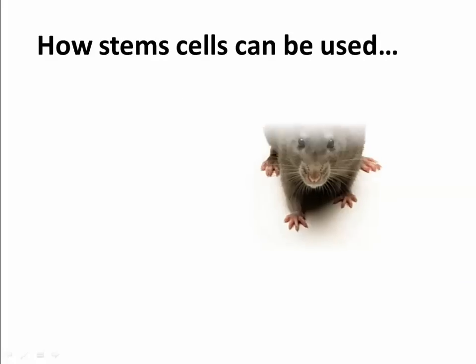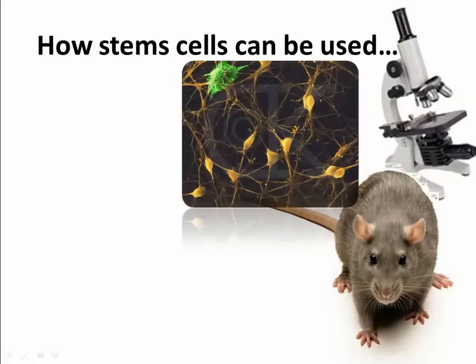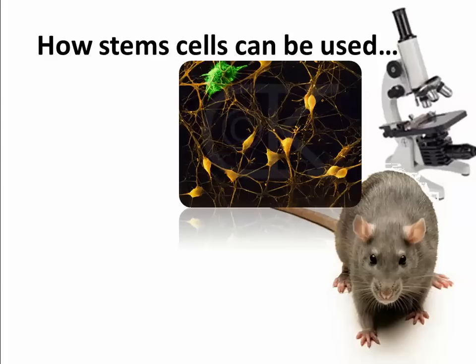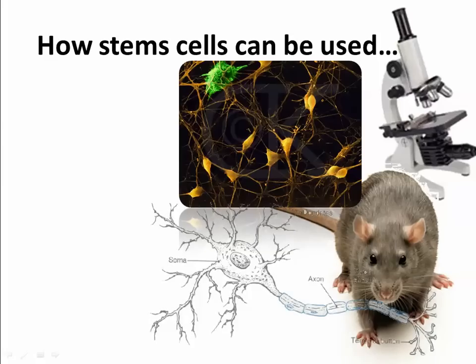Stem cells can be used to treat various types of diseases, and we're finding out more and more about this. Hopefully within the next 20 years, these technologies will be developed enough to help with heart disease, pancreatic disease, and various types of nervous system failures. Imagine the potential — the idea that you could take a stem cell that hasn't turned into anything yet, but trick it to turn into something specific.